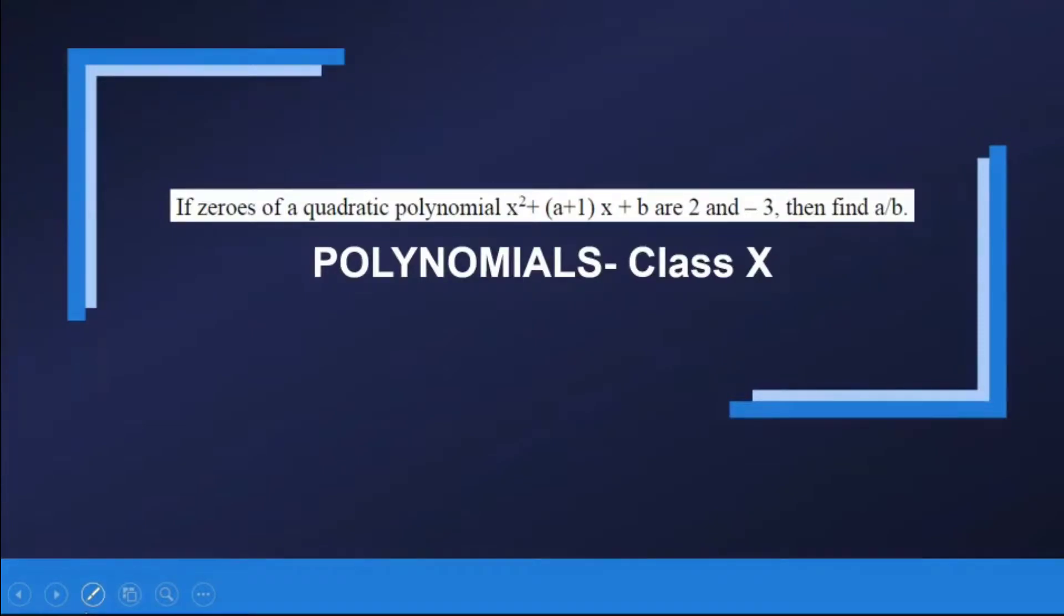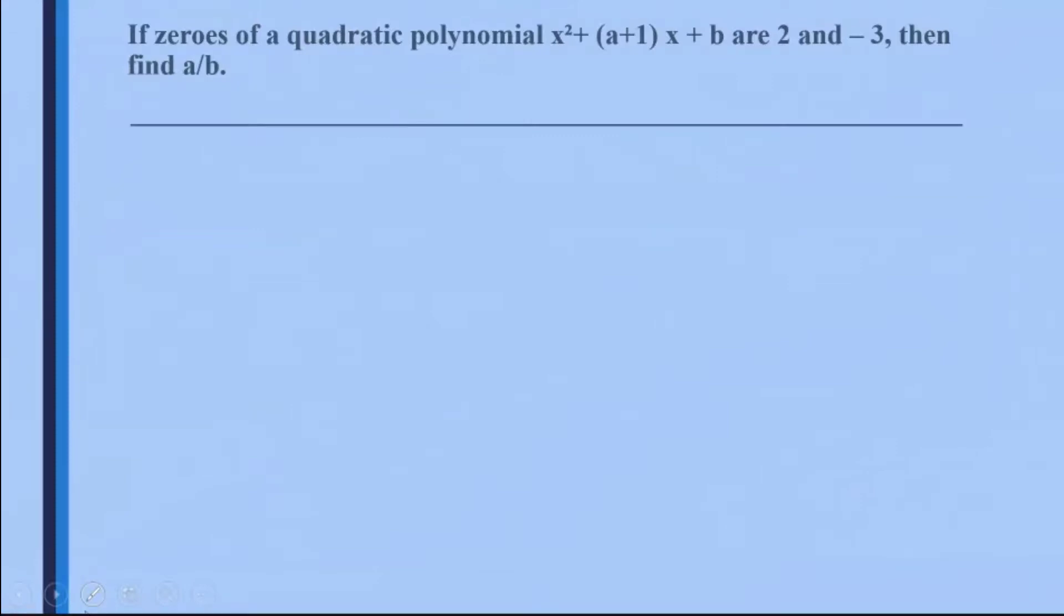Now the question says, if zeros of a quadratic polynomial x² + (a+1)x + b are 2 and -3, then find a/b.